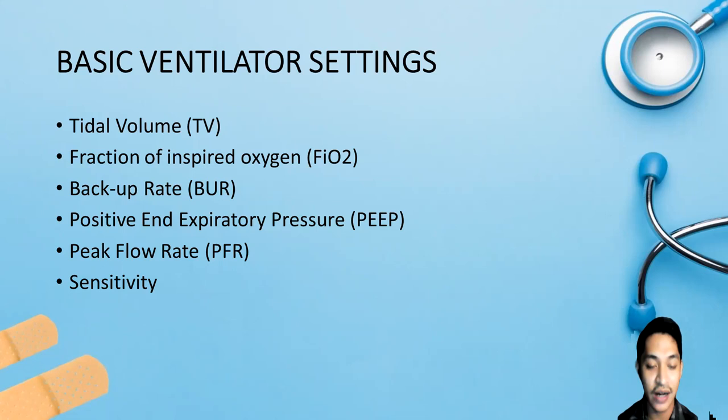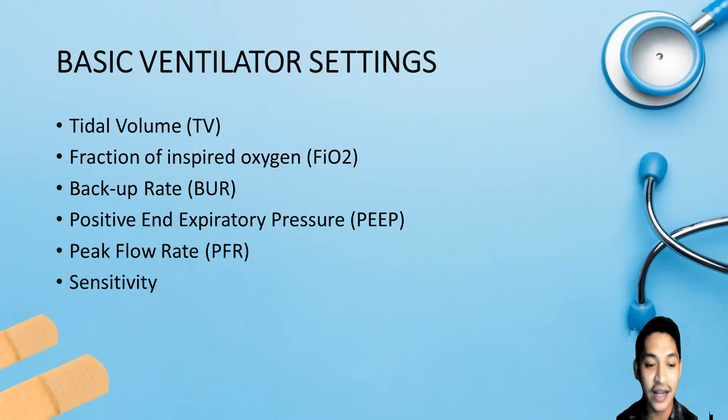A typical initial PEEP is 5 cm H2O. However, a PEEP of up to 20 cm H2O may be used in patients undergoing low tidal volume ventilation for ARDS. Sensitivity describes the ventilator's responsiveness to the patient's breathing effort and adjusts the level of negative pressure required to trigger the ventilator. With assisted ventilation, sensitivity is typically set at negative 1 to negative 2 cm H2O.